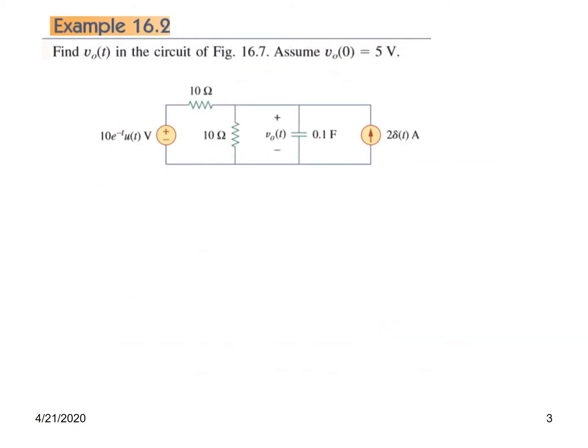This is example 16.2 — find v_naught(t). This is the circuit; v_naught(t) is the voltage across the capacitor, or in fact the voltage across all these terminals. The initial condition is given: v_naught equals 5 volts. First, let's transform this circuit into the s-domain.